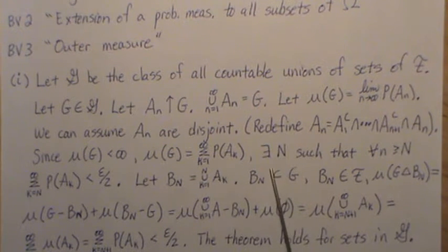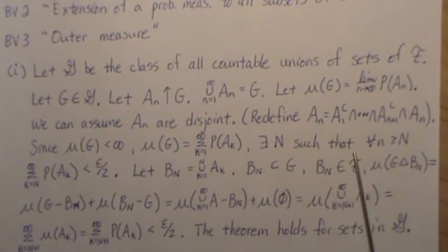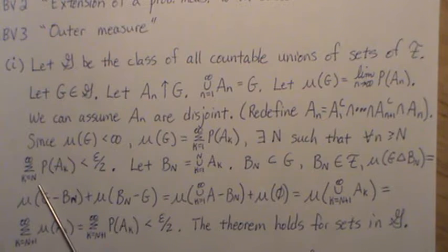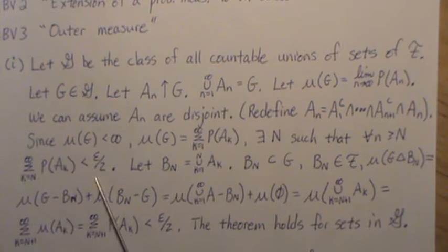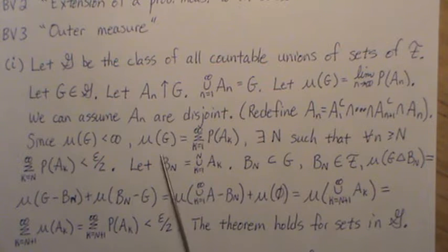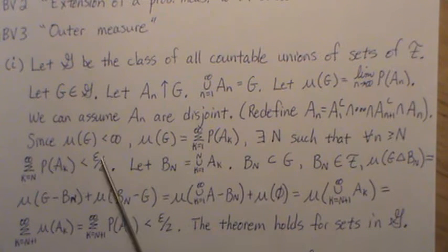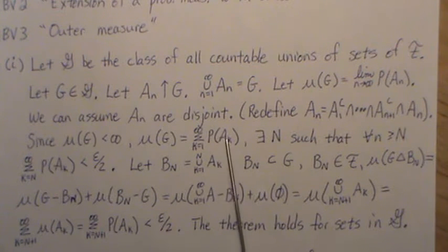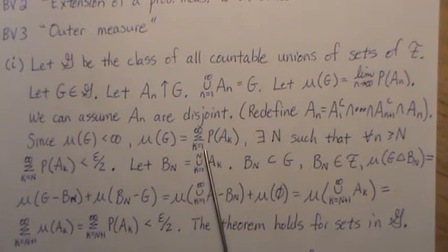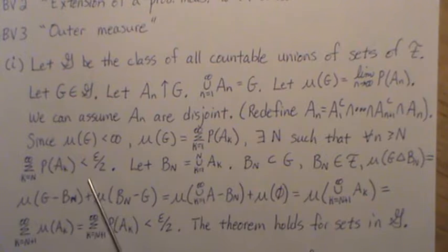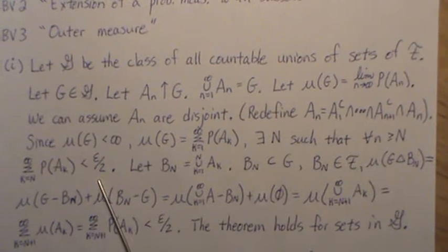There exists an N such that for all n when we're greater than that N, the sum of these probabilities is less than or equal to epsilon over 2. This infinite sum converges, it's finite, and so these terms all go to 0. So at some point, we can pick an N that's way out in the tail such that if we add them all up, it's still just a small amount, say epsilon over 2.